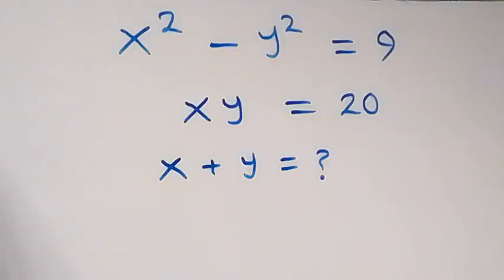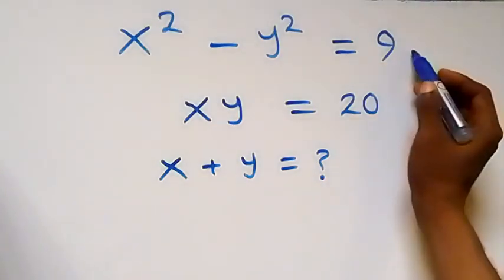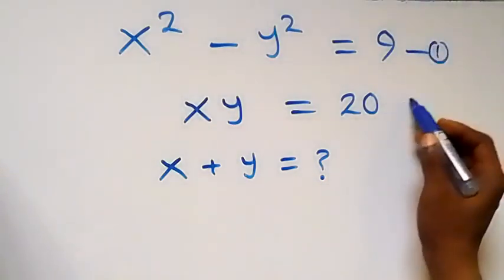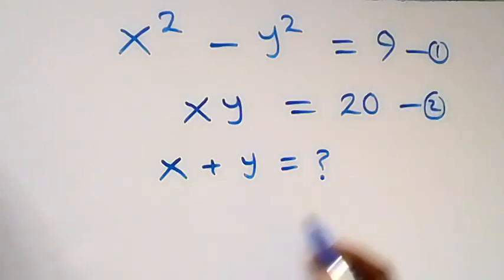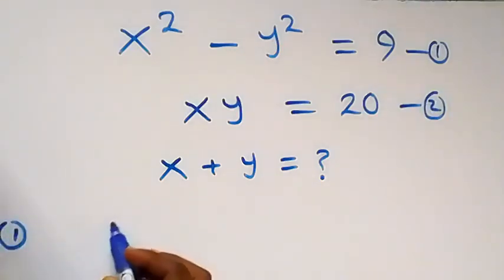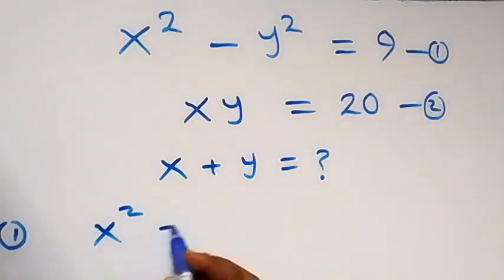Hello, you are welcome. We are going to solve for x plus y in this system of equations. Let's label this as equation one and here as equation two. From equation one we have x squared minus y squared.